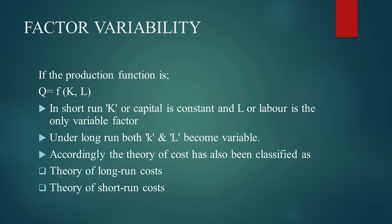Diminishing returns remain the case for a longer period of time. Time span is very important — whether it is a short run or a long run time span. If the production function is given to us as Q = F(K, L), where K stands for capital and L stands for labor, it means that the quantity of production is a function of capital and labor.